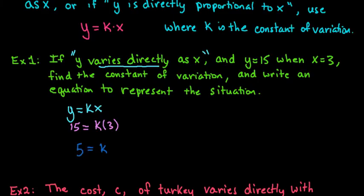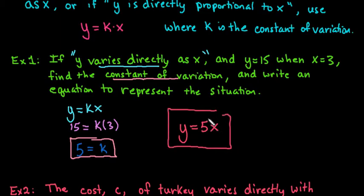So our general equation, if it asks for the constant of variation, this is our constant of variation. So we did the first part. And then to write the equation, all we have to do is plug that back in. And we would say that our general equation is y equals 5 times x. And then we could use this to find any other value of y for x. So this is just the general equation.